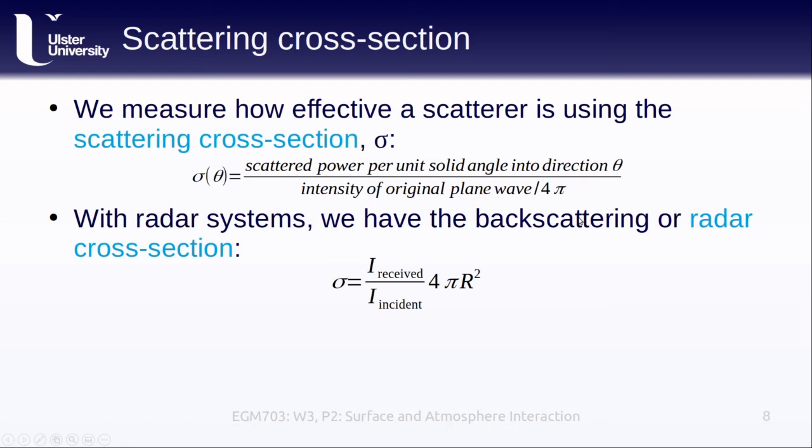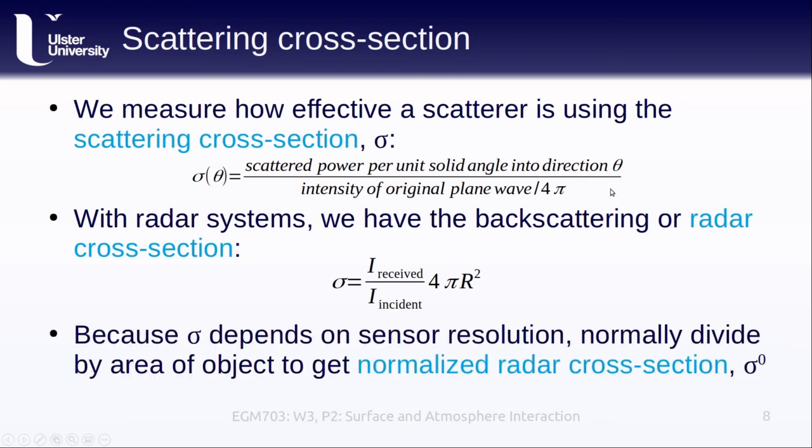From this, you can see that we should have units of area, or meters squared. Because this depends on the resolution of our radar sensor, we normally divide this by the area of the object to get the normalized radar cross section, sigma naught, which is also sometimes called the differential radar cross section. This is one of the fundamental properties that we measure with radar remote sensing. Because it is normalized by area, it is unitless. It's a property of the thing that we're observing, the target, not the measurement geometry of the system.